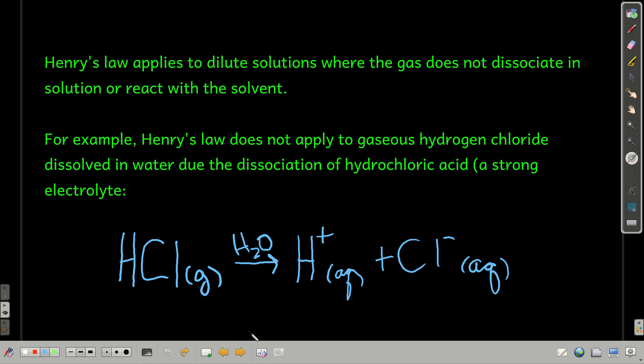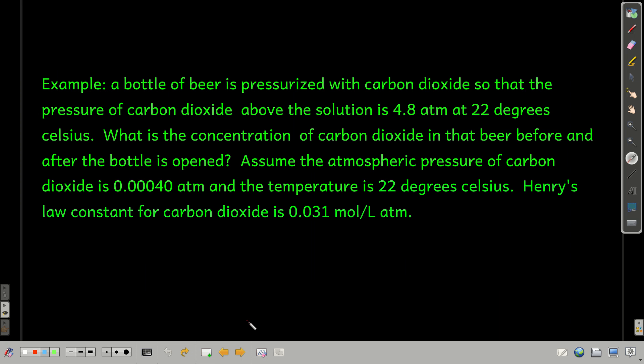But there's a lot of instances when we can use Henry's Law. For example, let's suppose we have a bottle of beer. And when it was bottled, they pressurized that bottle with carbon dioxide gas to a pressure of 4.8 atmospheres at 22 degrees Celsius. We can use Henry's Law here to calculate the concentration of carbon dioxide that's dissolved in that beer before it's opened and then after it's opened. And now, other things we have to know are, first of all, what Henry's Law constant is for carbon dioxide in water.